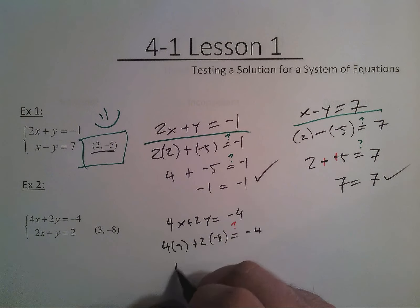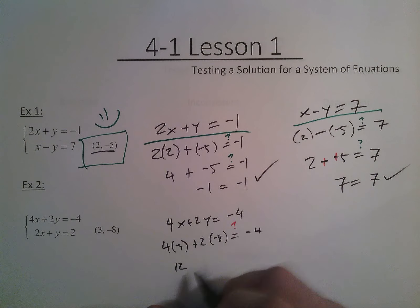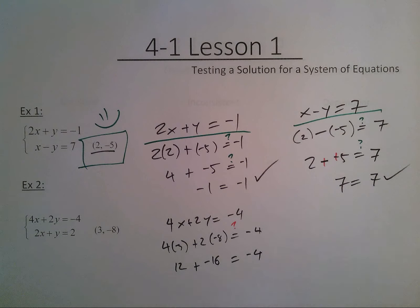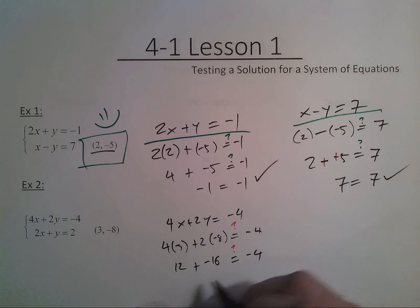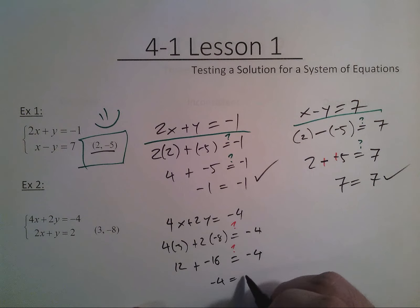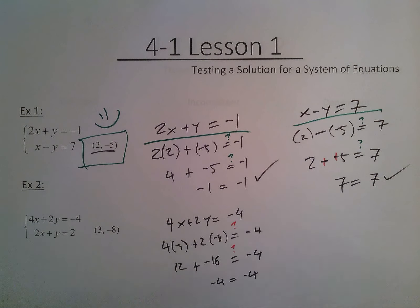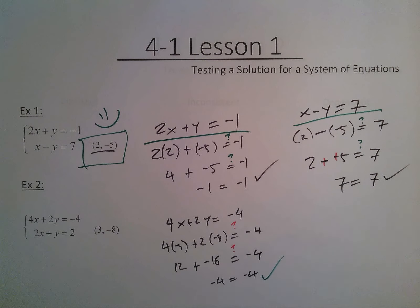So 4 times 3 is 12. 2 times negative 8 is negative 16. And then I'm still not sure if that equals my negative 4. And yeah, 12 minus 16 is negative 4. So, so far, the point works.